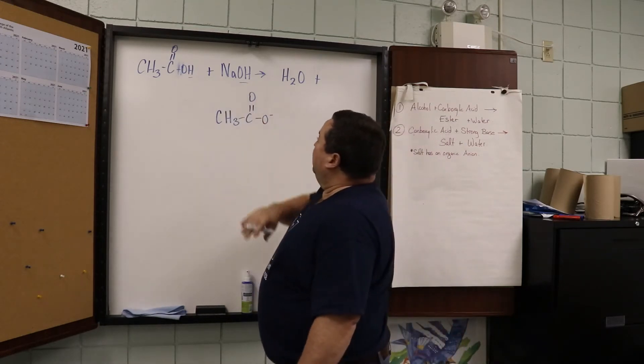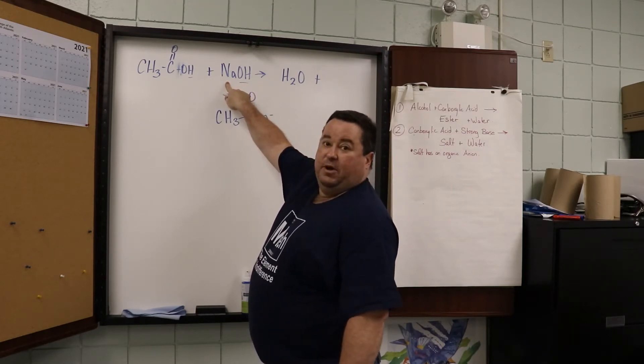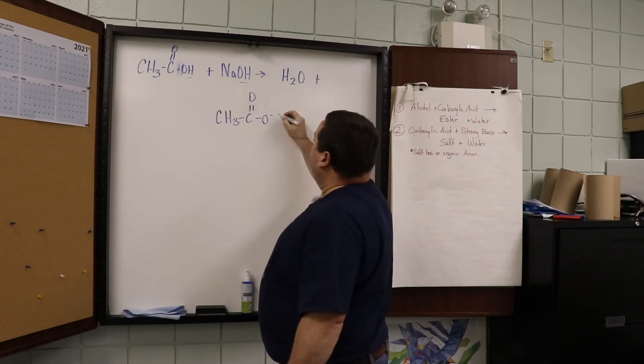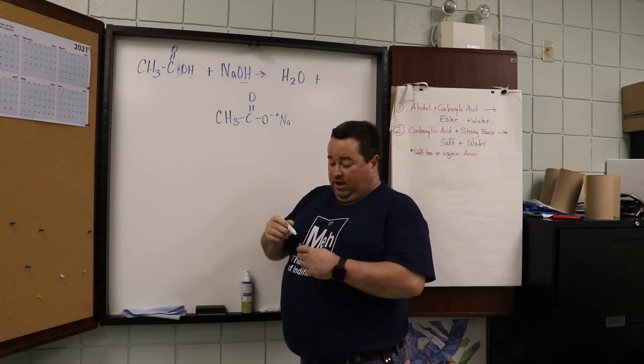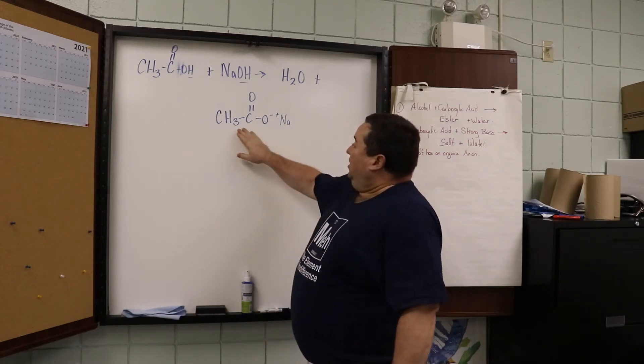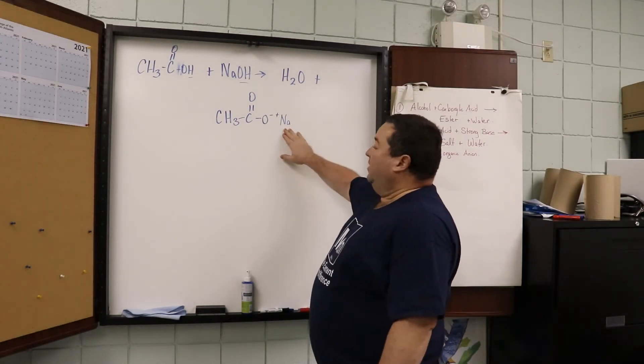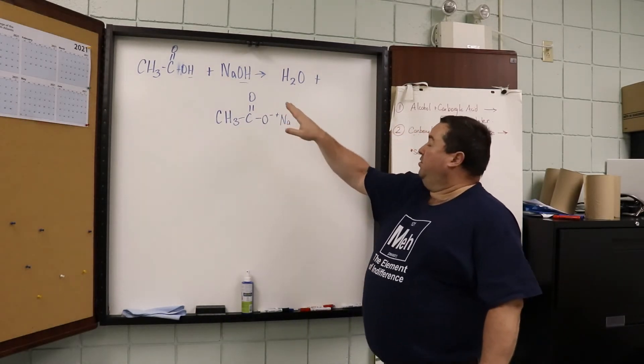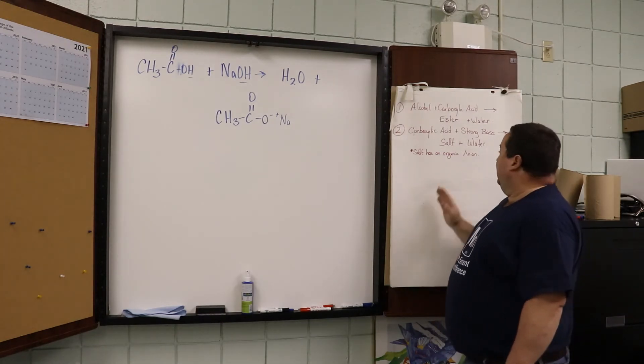The sodium from the sodium hydroxide, having lost a hydroxide one negative, leaves behind the sodium one positive. And this is a salt, a neutral ionic compound. We have an anion which is organic, and the cation which is the sodium from the sodium hydroxide. So it's a salt with an organic anion.